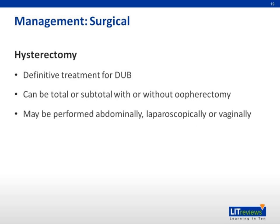Hysterectomy is the definitive surgery for DUB and should be reserved for women who are refractory to all other treatments. Hysterectomy can be total, in which the uterus and cervix are removed, or subtotal, in which only the uterus is removed. Hysterectomy can be accompanied by oophorectomy and can be performed abdominally, laparoscopically, or vaginally.